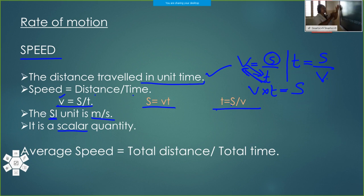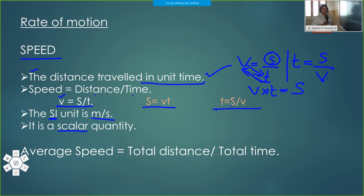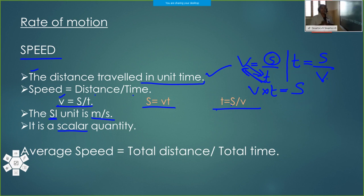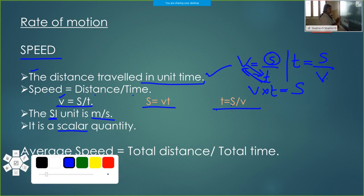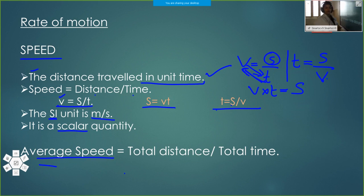Suppose the object is in non-uniform motion — the distance traveled varies with time. Then we have to take the total distance covered by the body divided by the total time taken. That is, we take the average speed. Average speed equals total distance divided by total time taken.